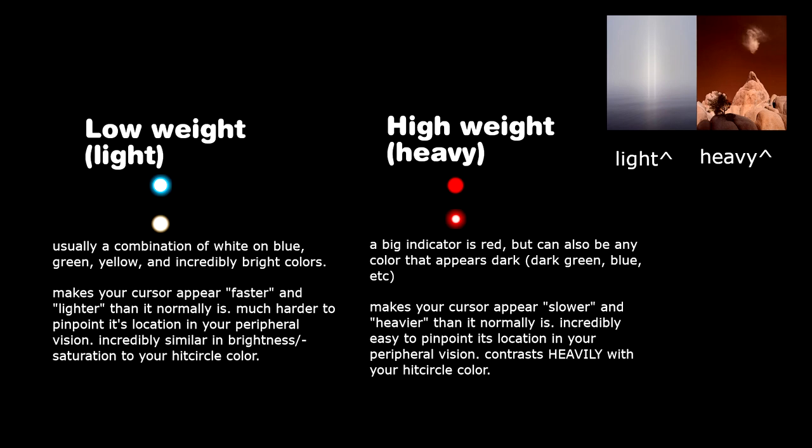So for me, I found light cursors to be most useful with high BPM slash high AR maps like DT or really just anything above 240 BPM. Like really anything that requires fast reaction is something that I would use a lightweight cursor for.